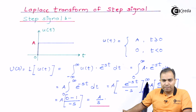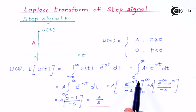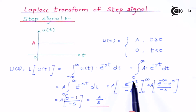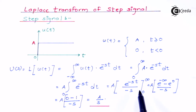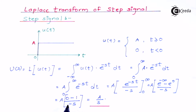Substituting the limits: first the upper limit of infinity gives e to the power minus infinity, and the lower limit of zero gives e to the power zero. We apply the upper limit first, then subtract the lower limit. e to the power minus infinity equals zero, and e to the power zero equals one. So we get zero minus one, all over minus s.